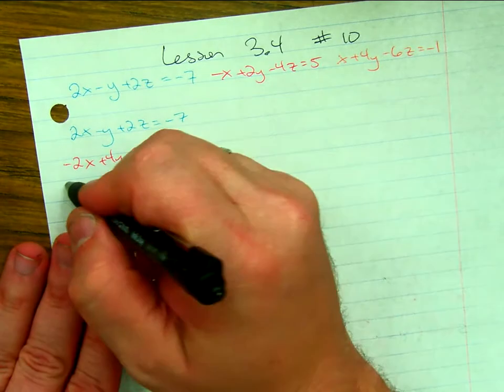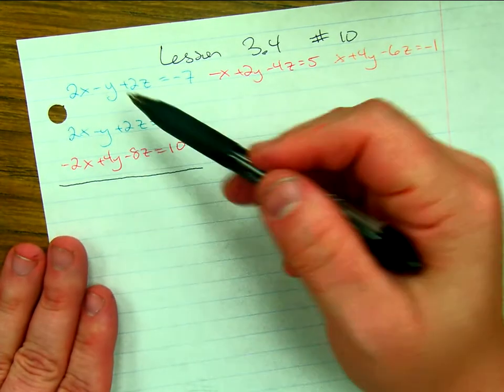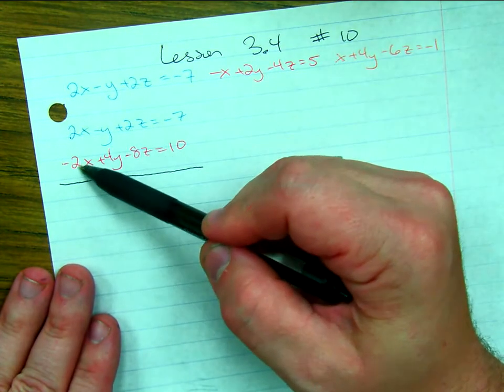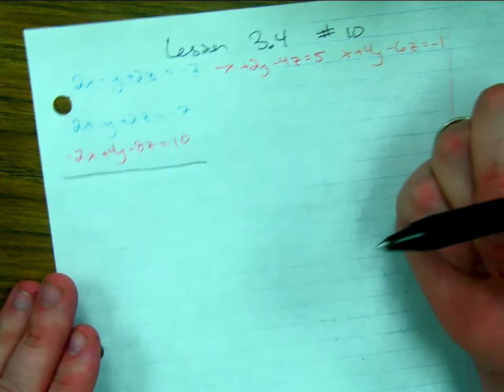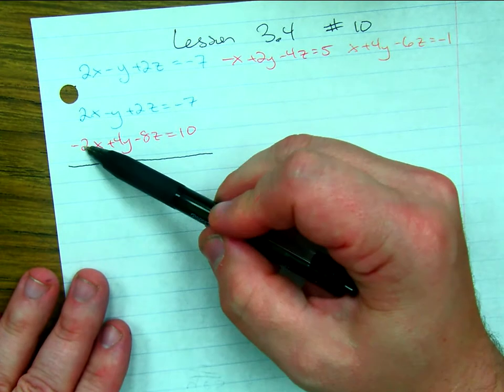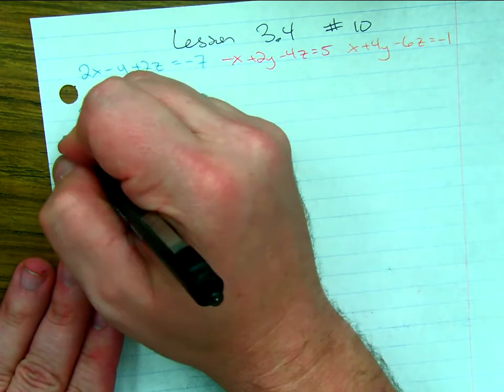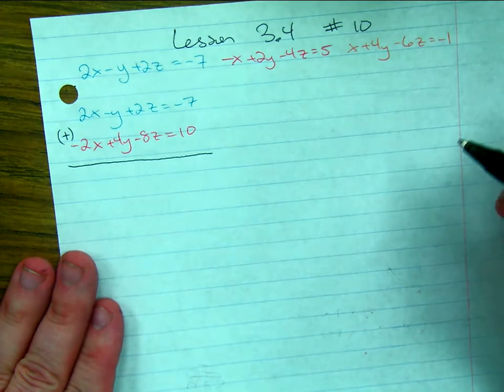That gives me negative 2x plus 4y minus 8z equals 10. Now, when I combine these equations, if I were to subtract like we've been doing, I would get 2x minus 2 more x and have negative 4x's. But since these have the same coefficient with opposite signs, I could eliminate the x's by simply adding them together.